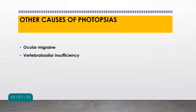Are there any other causes of photopsias not related to the eyes? Yes. Ocular migraine, which is associated with aura, and also vertebral basilar insufficiency can irritate the meninges around the visual pathway and therefore cause photopsias. However, the key difference is that photopsias of retinal origin last only about one second, whereas ocular migraine photopsias can last up to about 30 minutes and are accompanied by aura.